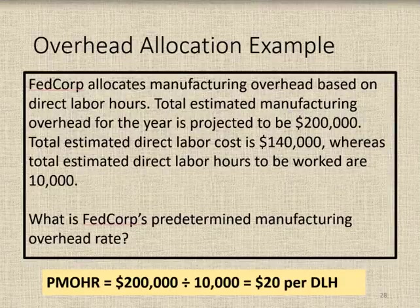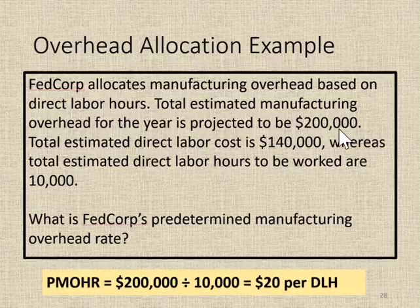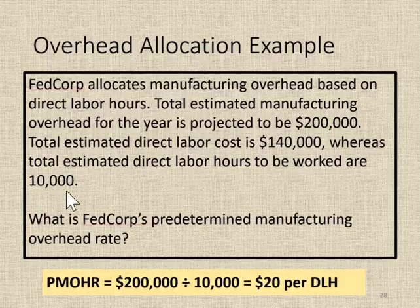Let's take a look at an overhead allocation example. FedCorp allocates manufacturing overhead based on direct labor hours. Total estimated manufacturing overhead for the year is projected to be $200,000. Total estimated direct labor cost is $140,000, whereas total estimated direct labor hours to be worked are 10,000. So what is FedCorp's predetermined manufacturing overhead rate?